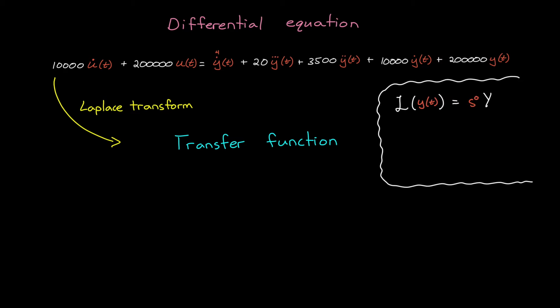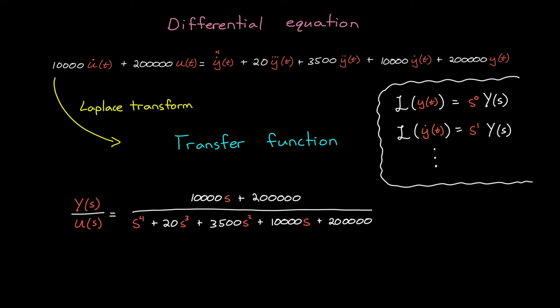So y of t, which isn't a derivative, becomes s to the 0 times y of s. And y dot of t would become s to the 1 times y of s, since it's a single derivative. And using this logic, we can transform the differential equation in the time domain into an equivalent transfer function in the complex plane, or the s domain.